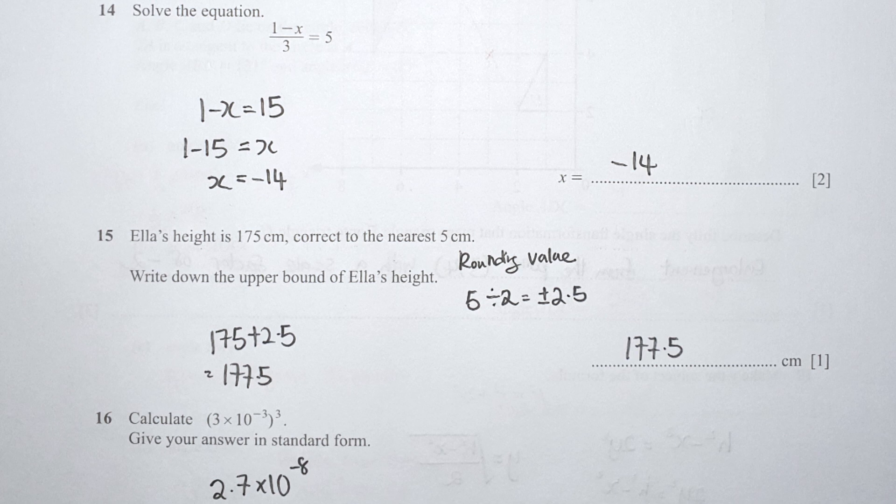For question 14, I multiply 5 with 3 to get 15, giving 1 minus x equals 15. After rearrangement, x equals 14.